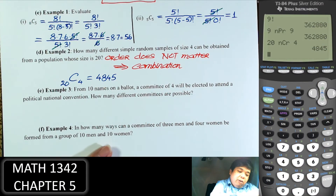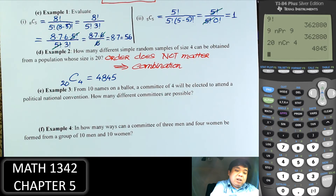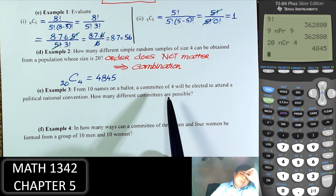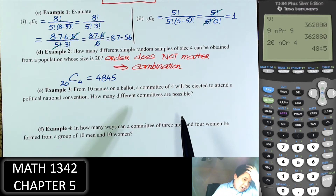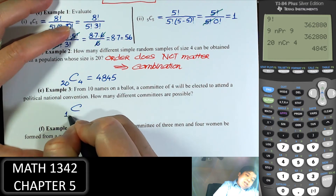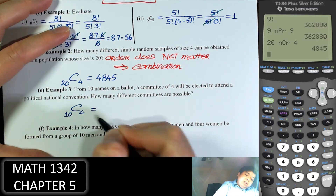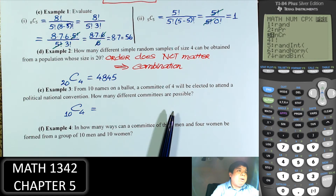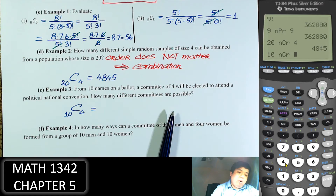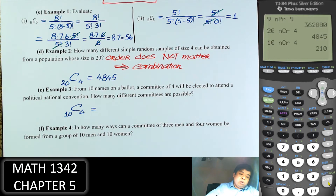From 10 names on the ballot, a committee of 4 will be elected to attend a political national convention. How many different committees are possible? Because committee members all have the same role, the order doesn't really matter. So we pick 4 out of 10: 10C4, which equals 210.